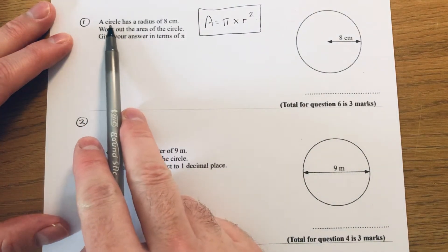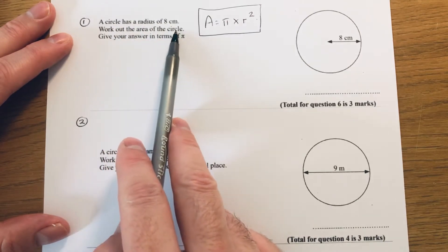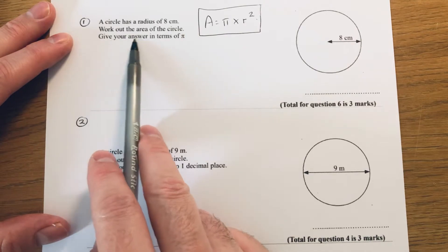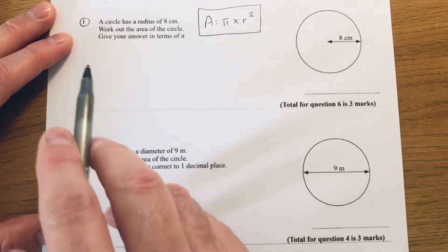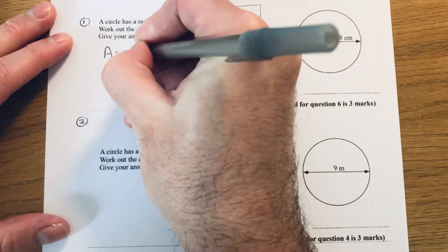Let's have a look at the first question. A circle has a radius of 8 centimeters. Work out the area of the circle. Give your answer in terms of pi. If we write our formula down first, which is pi times r squared.